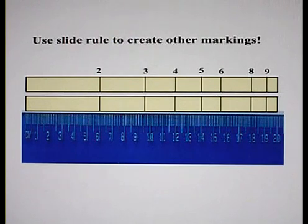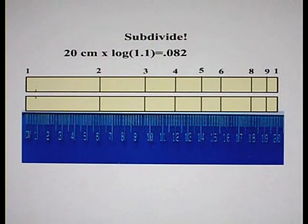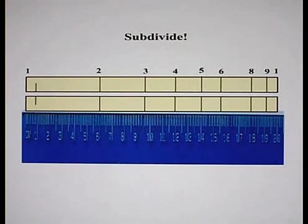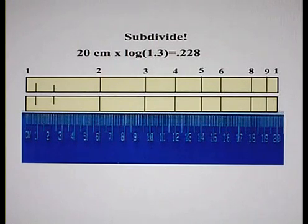Since the primes cannot be found by a product, we must put those markings on in the same way we did with the other integers. We're now starting with 11 and 13.